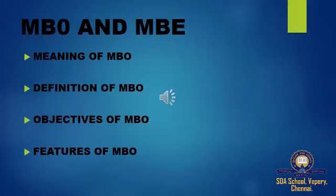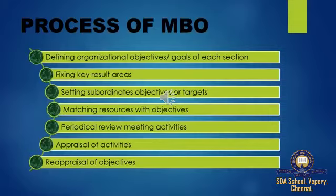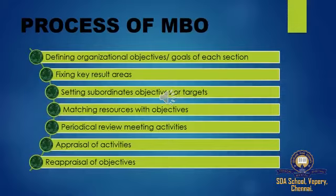Today in this class we will also see MBE. Now we move on to the process of MBO. The first point is defining organizational objectives. The objectives are to be framed by the top level employees. In each company we have three levels: top level, middle level, and lower level employees. The objectives are framed by the top level and move downwards. First the long-term objectives are framed, afterwards the short-term objectives are framed.